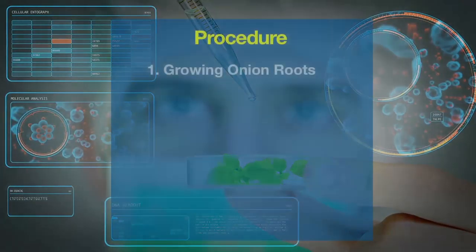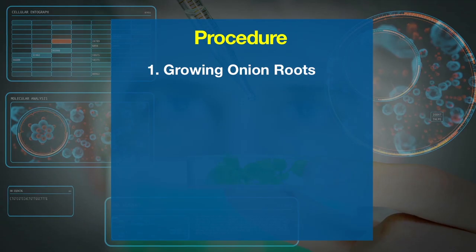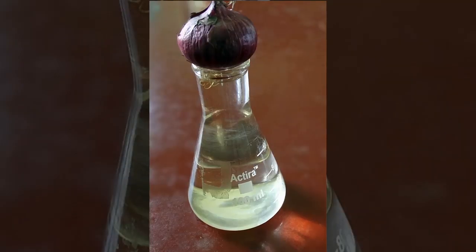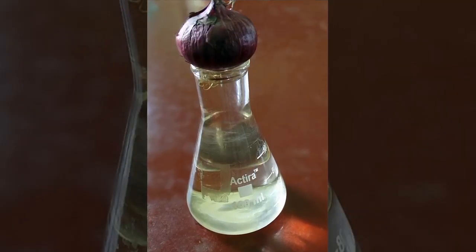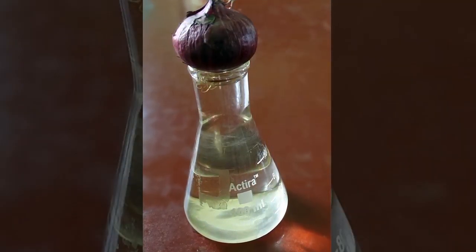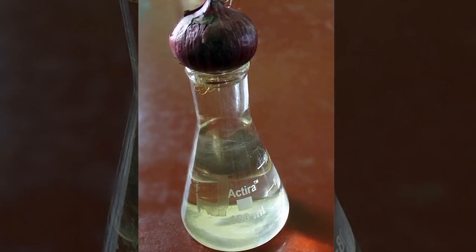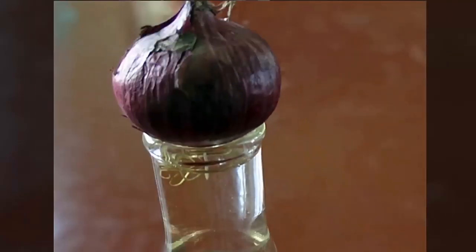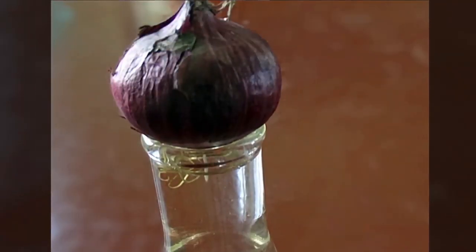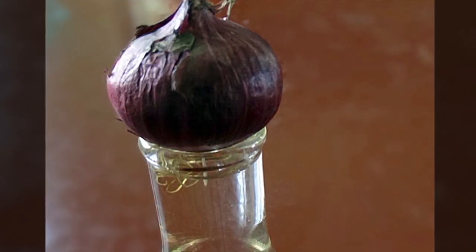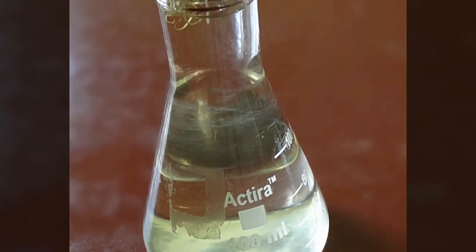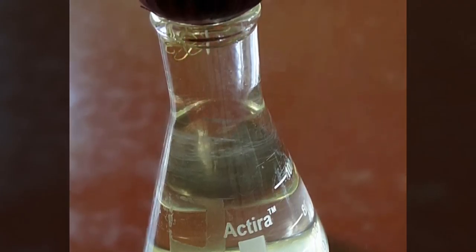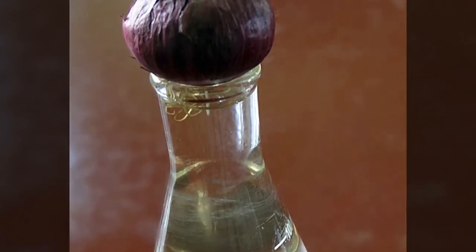Let us now see the procedure of the experimentation. The first step is growing onion roots. Take one onion bulb and suspend its bottom part in a beaker containing water by using toothpicks to hold the onion at the top of the water. Keep for 3-4 days and wait for the roots to grow.